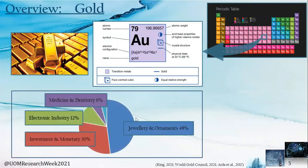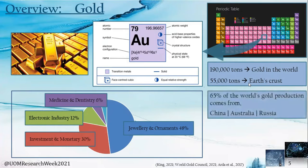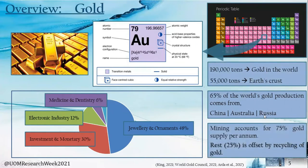The primary use of gold is jewelry and ornament manufacturing. Due to its high value and rarity, gold is also used in investment fields such as gold bars and coins. The electronic industry is the third largest consumer of gold. According to the World Gold Council, only 55,000 tons remain as reserves out of 190,000 tons. China, Australia and Russia supply more than 65% of world gold production. However, 25% of gold supply is done by recycling of gold products such as jewelry recycling.